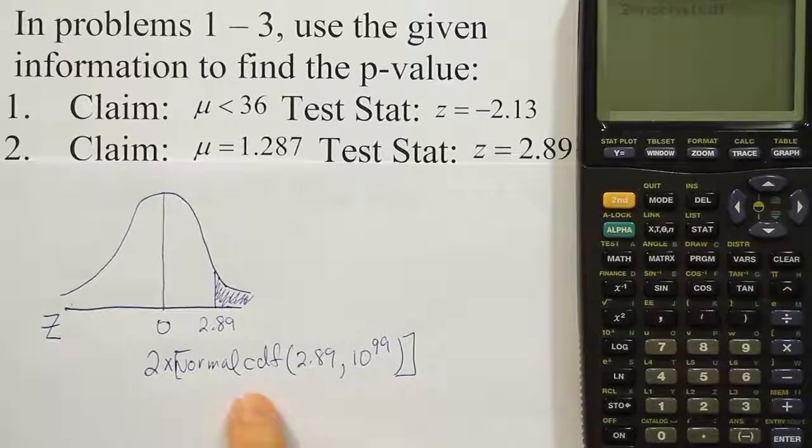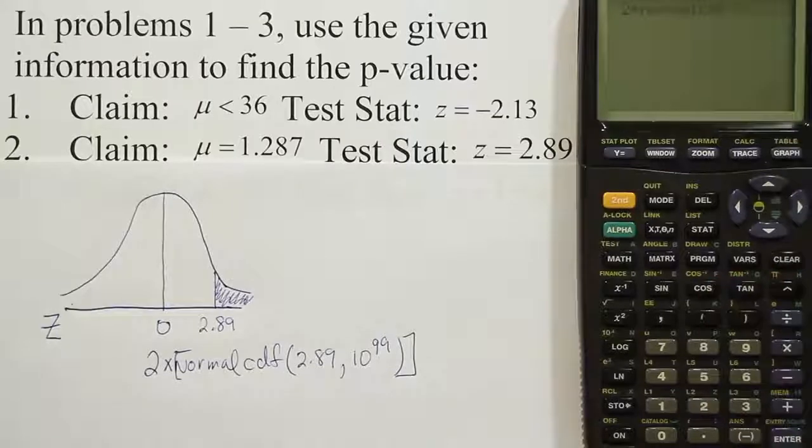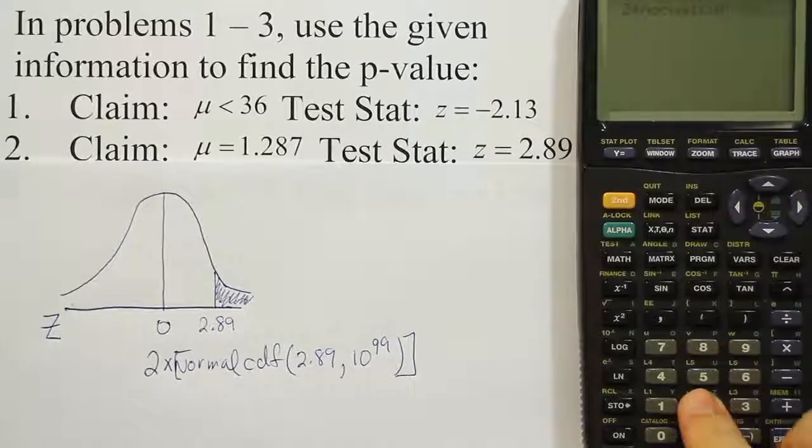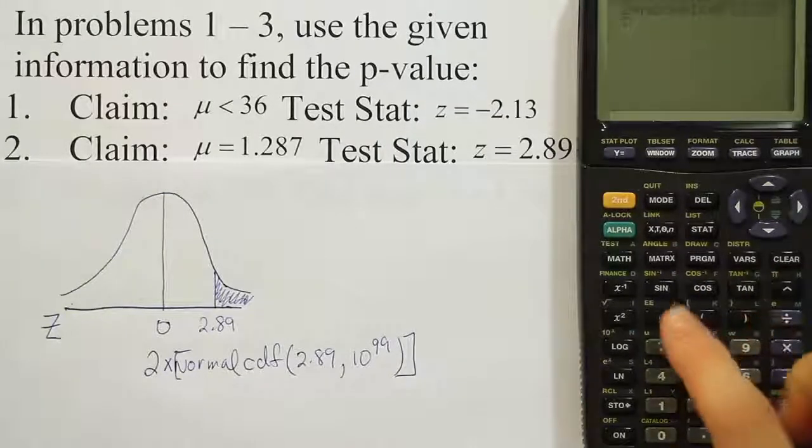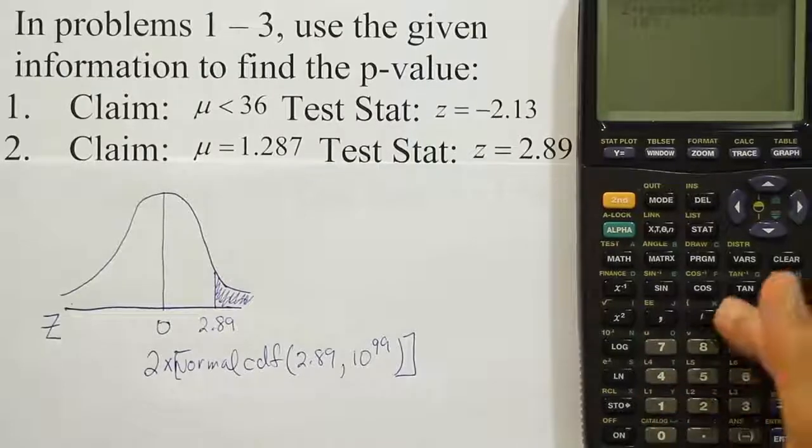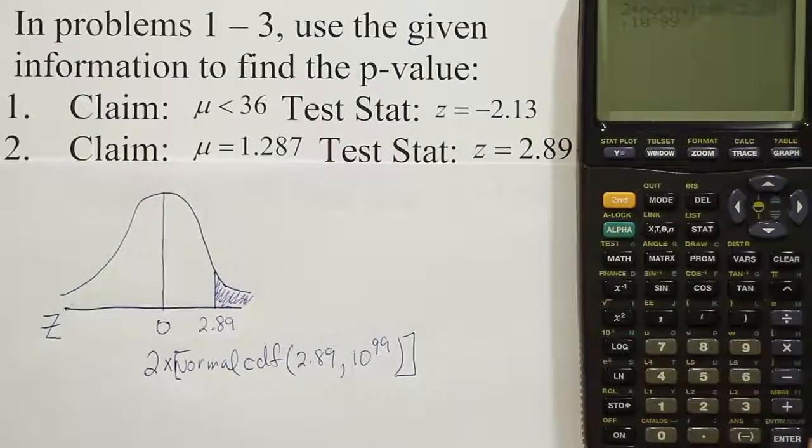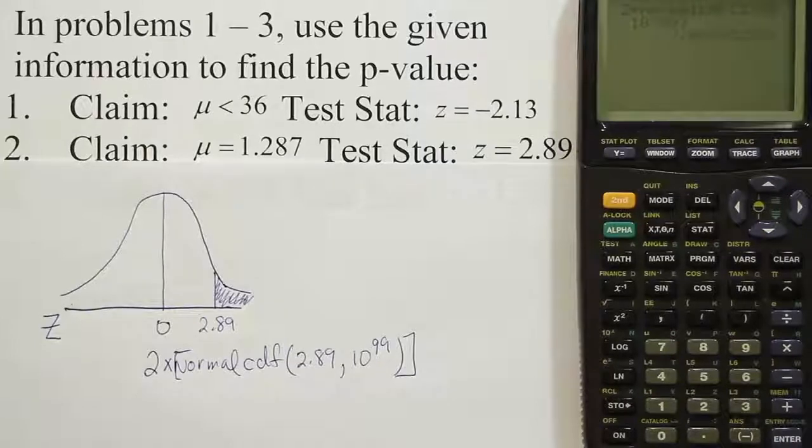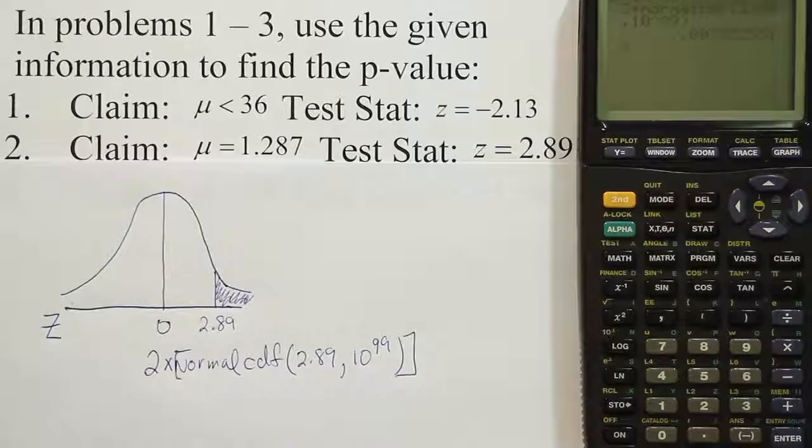And you don't need to put this extra bracket the way I did here. You just do 2 times normal CDF. And then do 2.89, 10 to the 99th power. Close up the parentheses. Hit enter. And your answer is .0039.